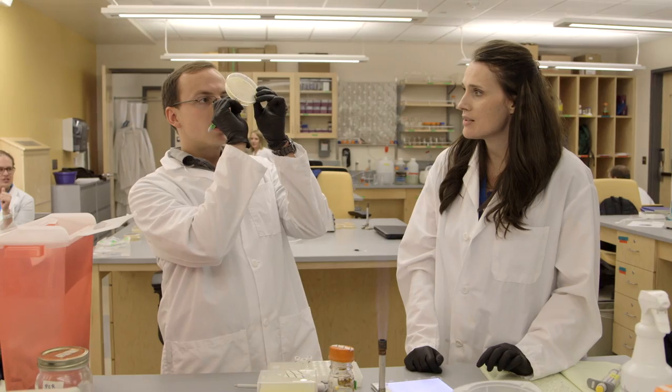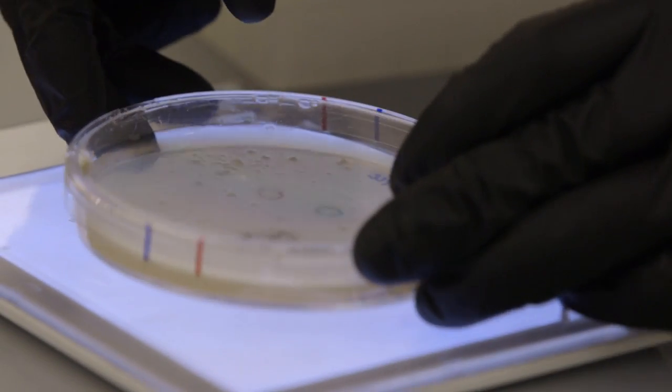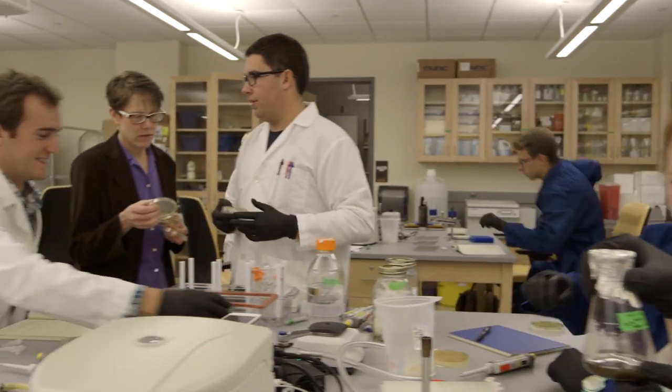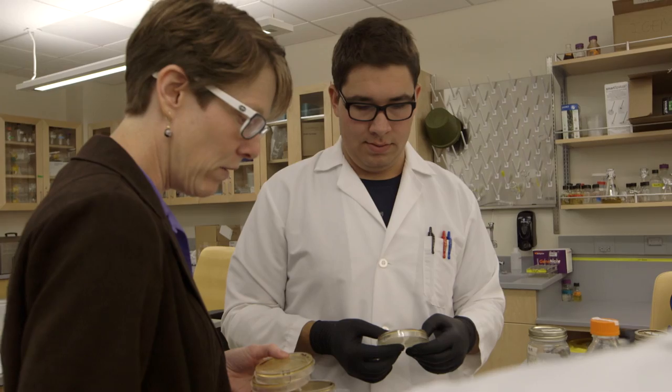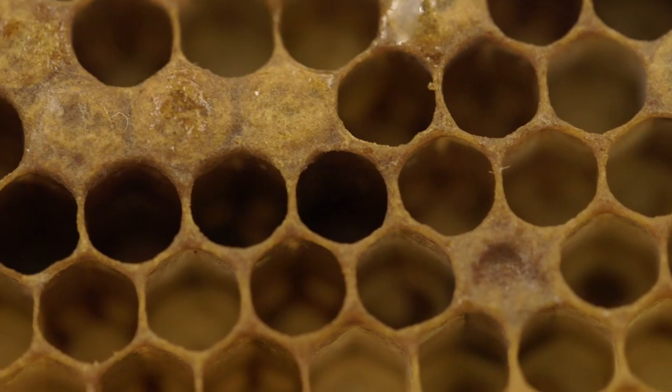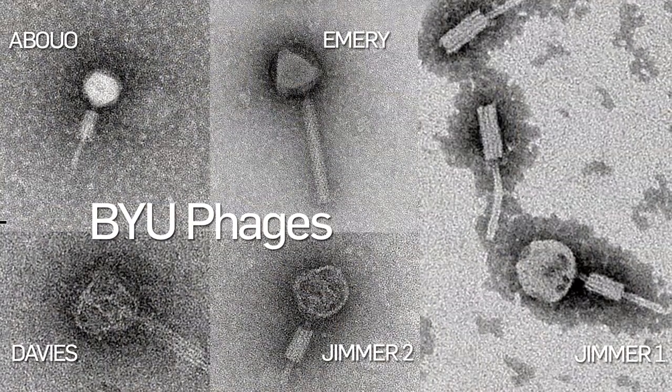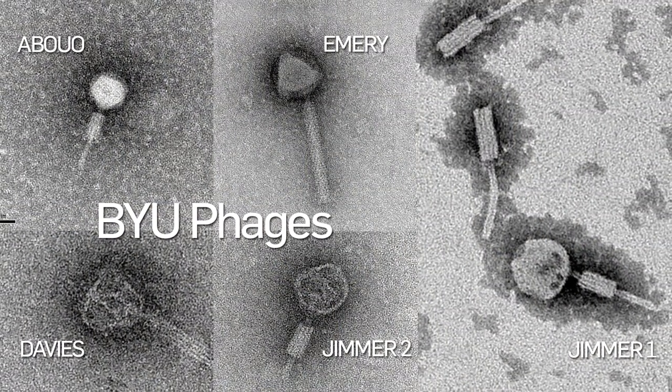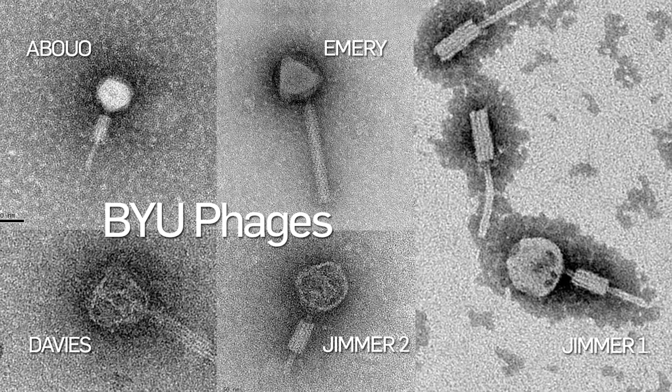By isolating them from the environment and using them for a specific purpose, it's an organic treatment because we haven't changed or modified anything — we're just using nature's natural bacteria killers for our specific purpose. It's exciting for us at BYU to do phage research on this particular bacteria because this is clearly a worldwide problem in honeybees. We've published five full genome sequences, and so far only one other genome sequence for a phage against American Foul Brood has been published.